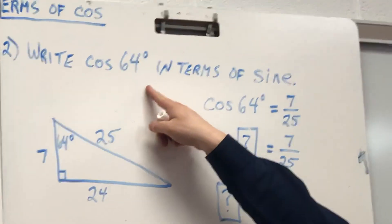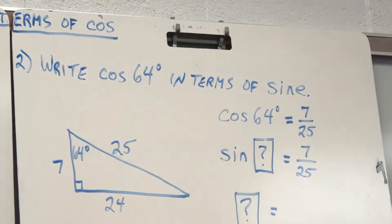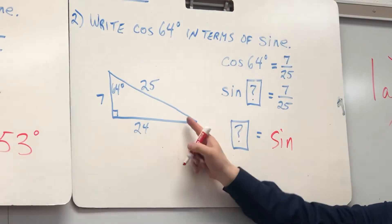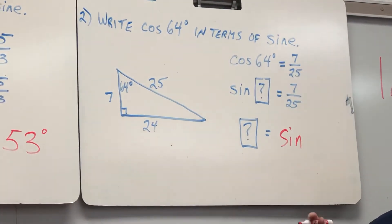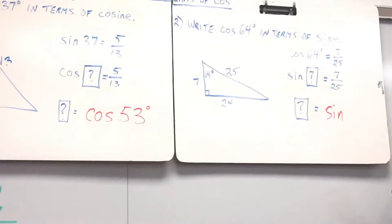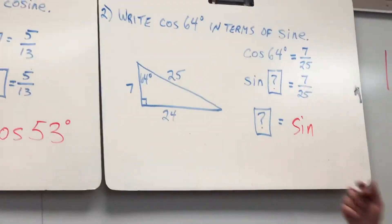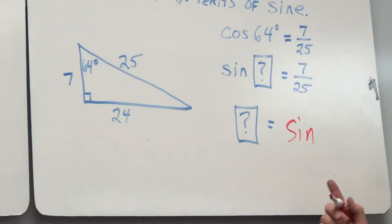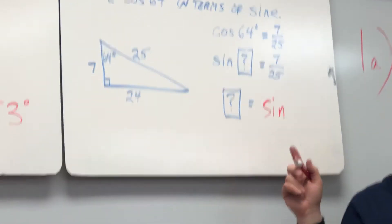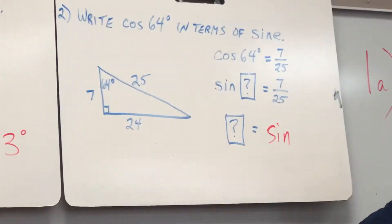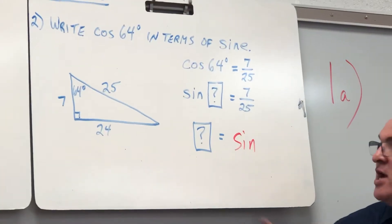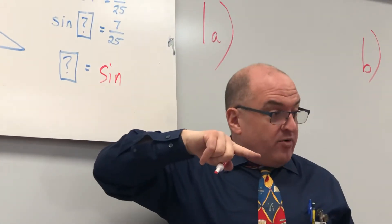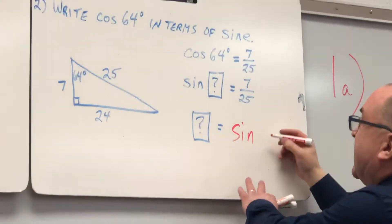For example, cosine 64 is going to be sine what? In other words, what's the other angle? Cosine 64 is going to be sine 26, right? Because 64 plus 26 is 90. So it's sine 26.